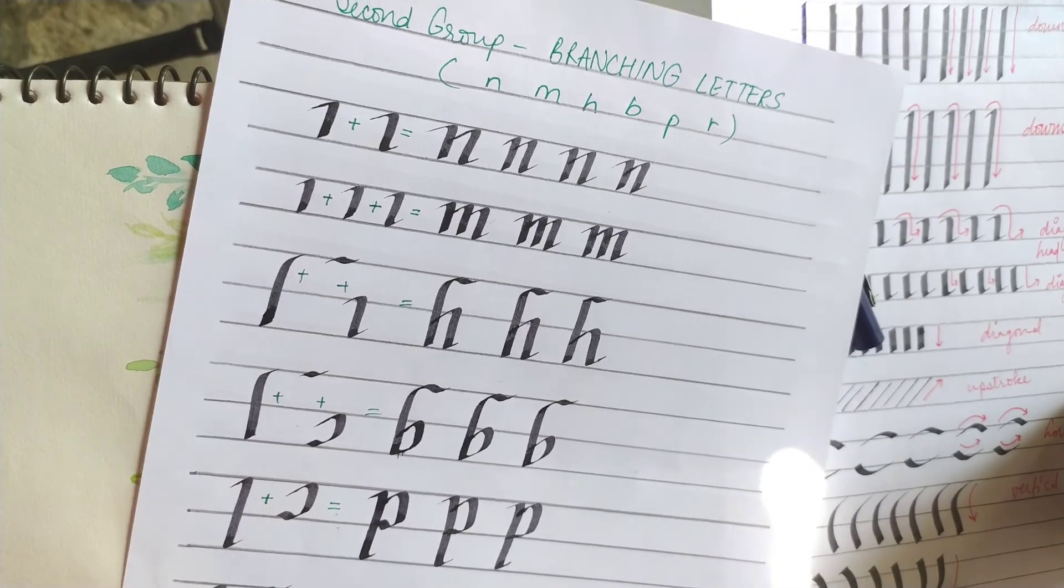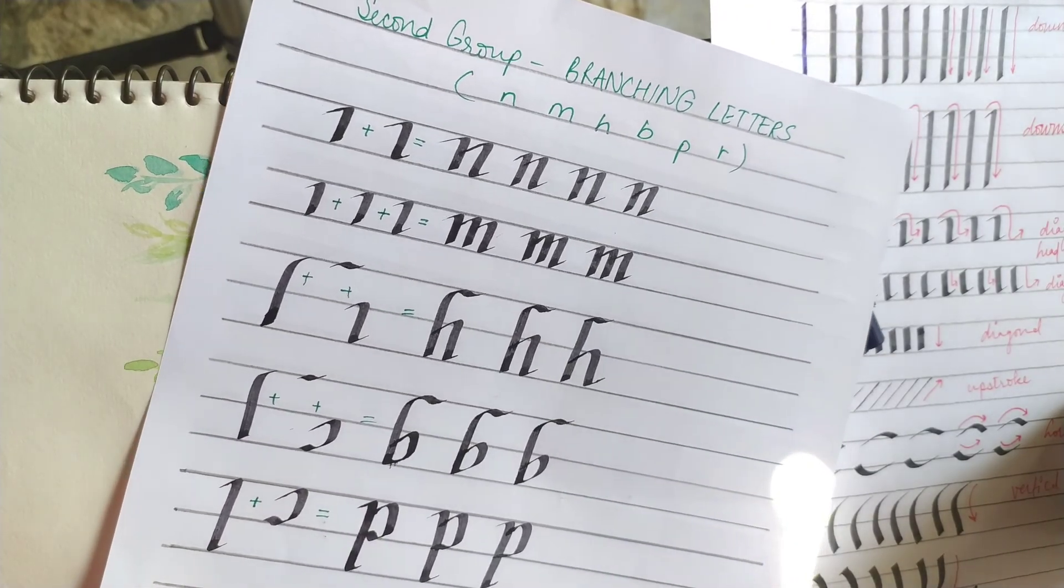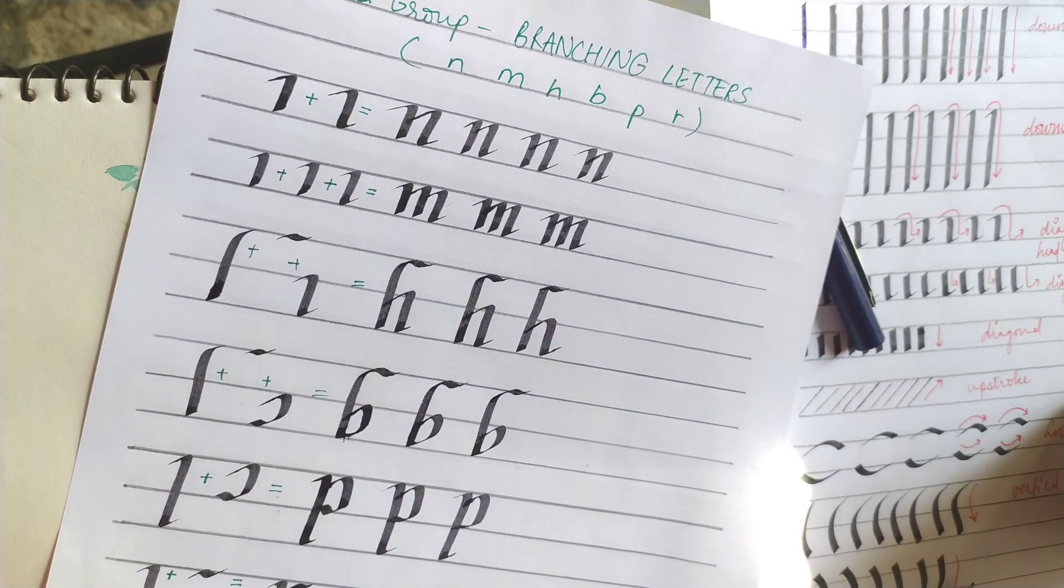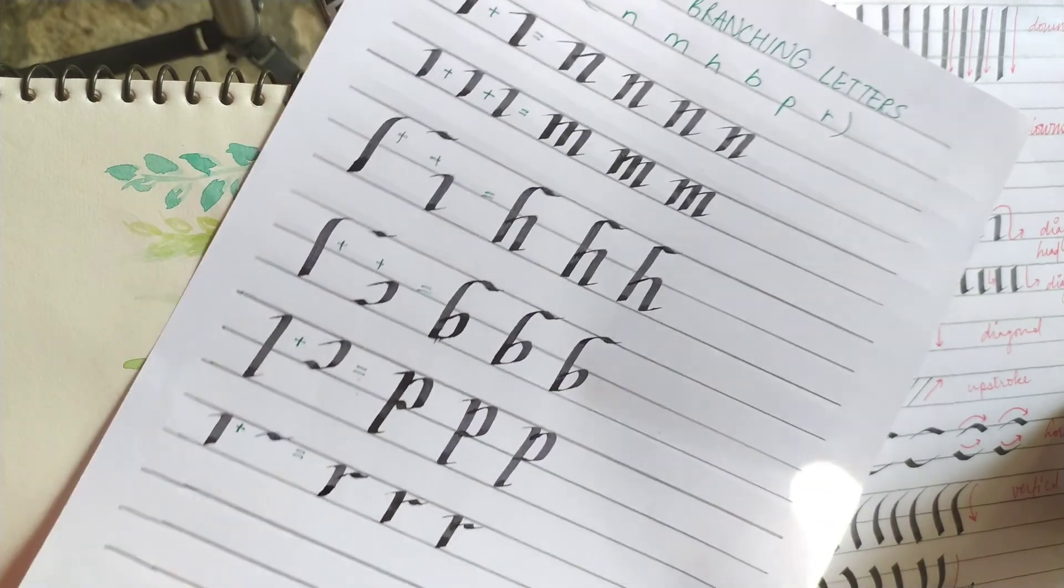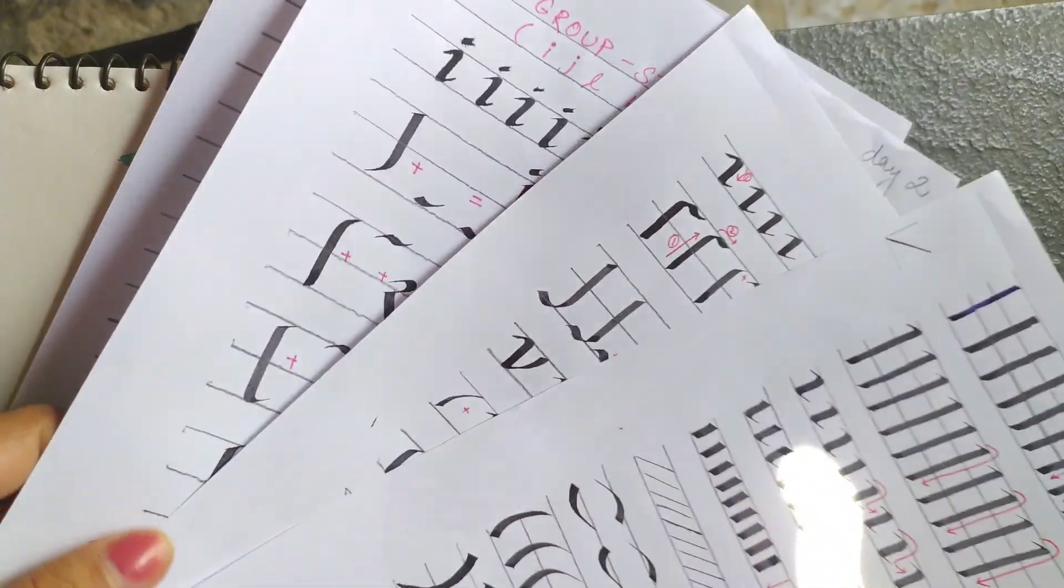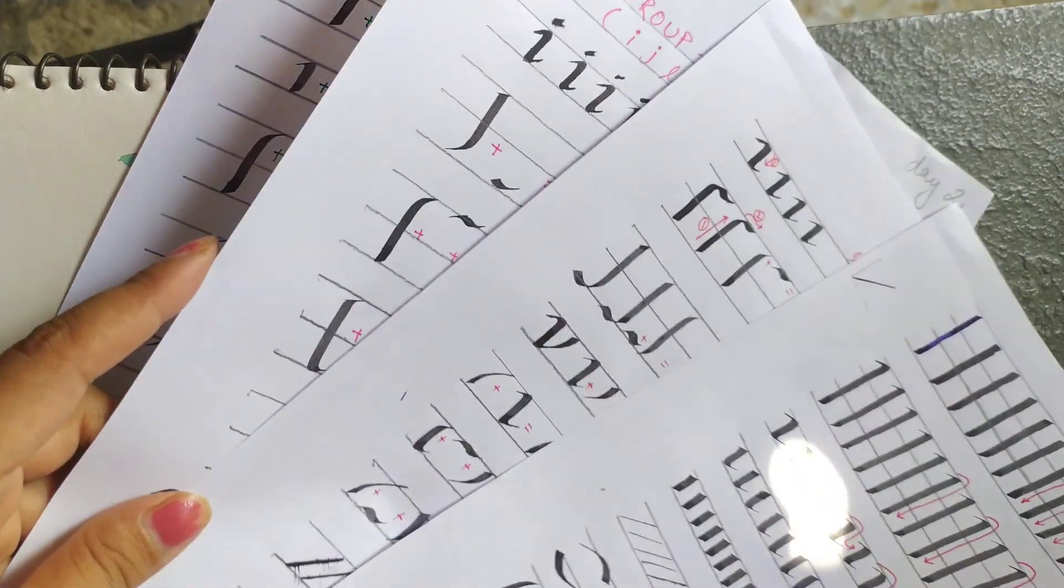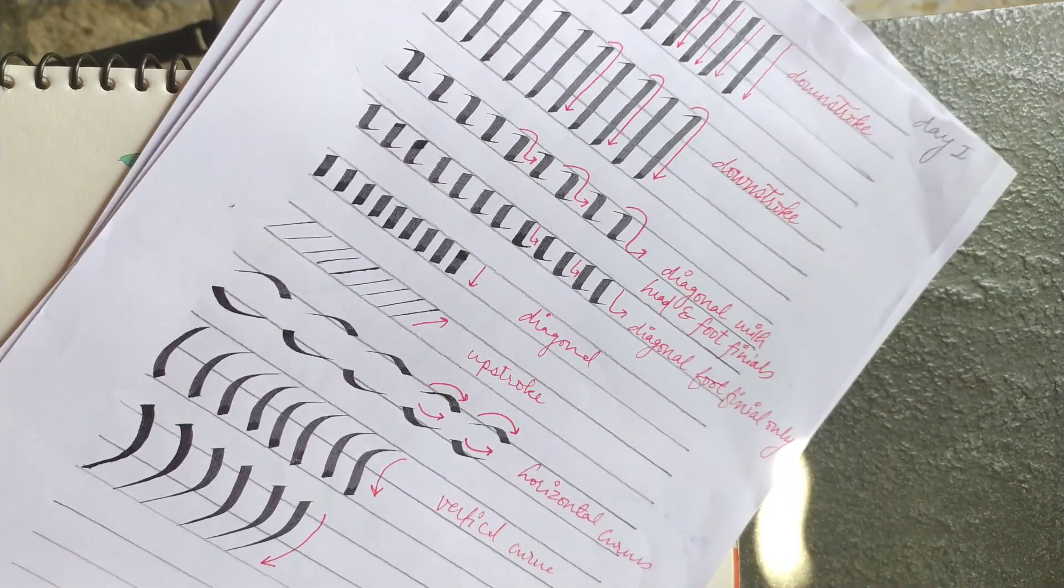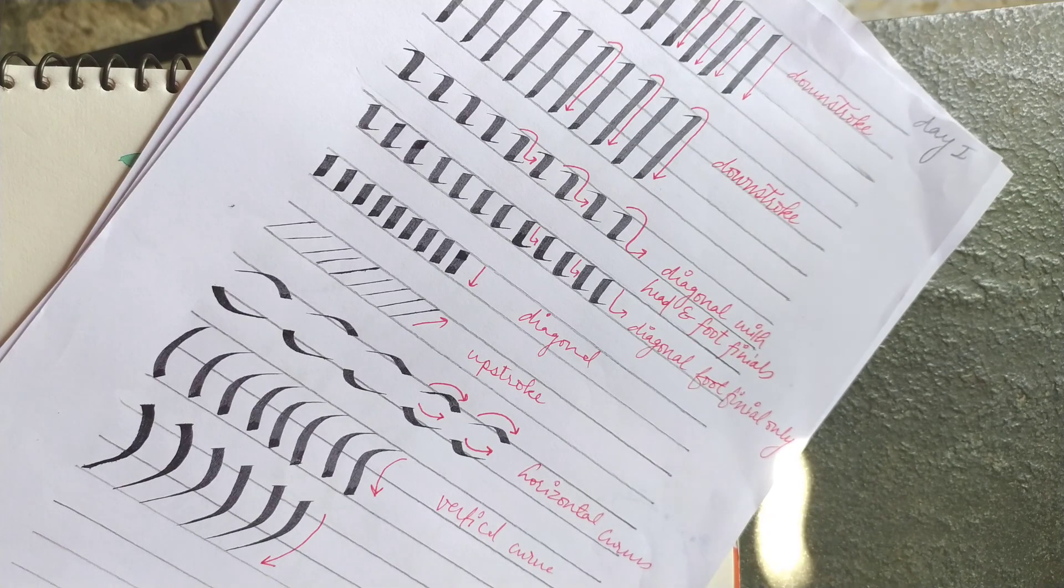So today we tried these branching letters in our second group: letter N, M, H, B, P and R. Please try doing them. To get all the notes, please write your Gmail ID in the comment box and I will email you. Join my telegram group, the link is given in the description box. Thank you and have a good day.